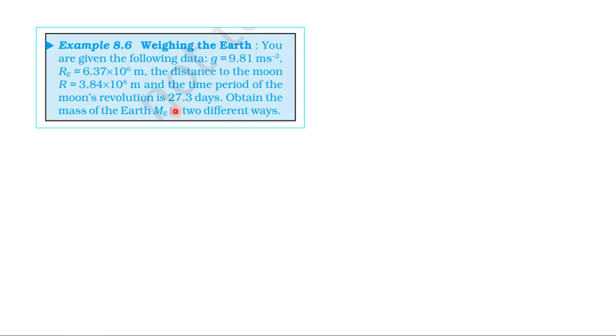From NCERT textbook, from the Gravitational Topic, let us solve example 8.6: Weighing the Earth. You are given the following data: g equals 9.81 m per second squared, radius of the earth equals 6.37 × 10^6 meters, the distance to the moon r equals 3.84 × 10^8 meters, and the time period of the moon's revolution is 27.3 days. Obtain the mass of the earth M_e in two different ways.